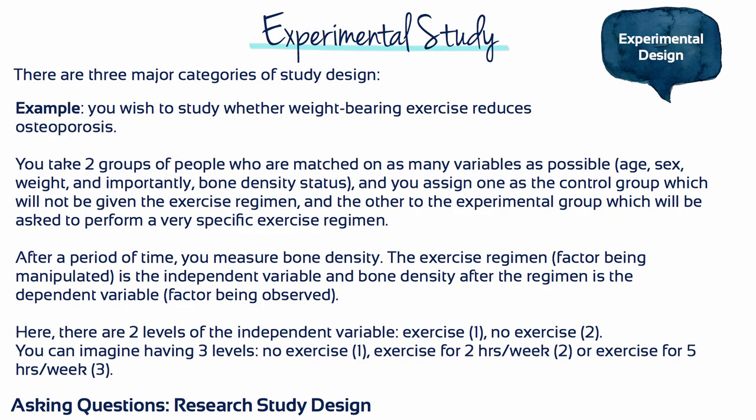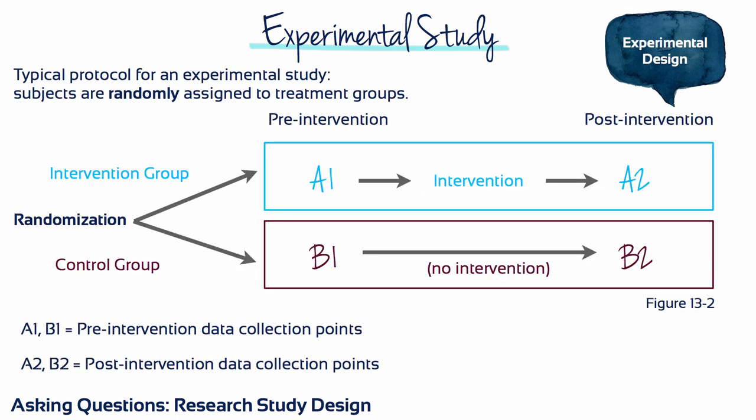Here's an example of an experimental study in which the researcher wants to know whether weight-bearing exercise reduces osteoporosis. Here's a typical protocol for an experimental study in which the subjects are randomly assigned to treatment groups.